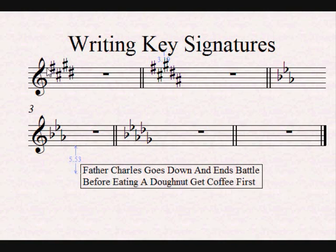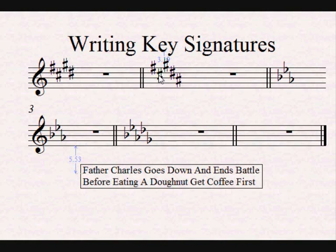For example, if we need a key signature with four sharps — in the case of A major — we go: F for Father, C for Charles, G for Goes, D for Down, and that is enough. Using Father Charles Goes Down And Ends Battle, I can build the key signature for E major, and even for B major — Father, F, Charles, Goes, Down, And Ends — and that's it. We have the key signature for B major.